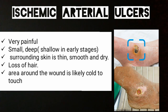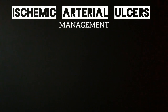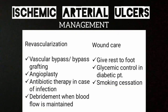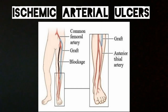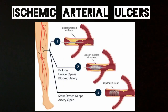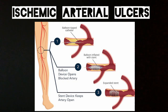The management of arterial ulcers can be done in two ways: surgically and through wound care. Surgically, this is called revascularization, which includes vascular bypass and angioplasty. In vascular bypass, wherever the artery is blocked, a new connection is formed using a graft so that blood supply can reach the tissue. In angioplasty, a stent is inserted into the blocked blood vessel — in the area of the atherosclerotic plaque — and the stent, like a balloon, is expanded to increase the diameter of the vessel.